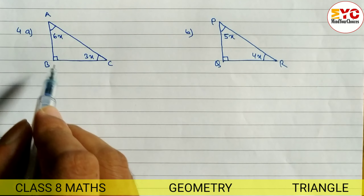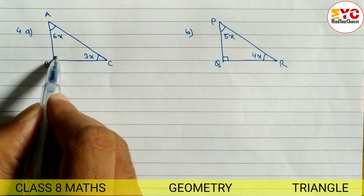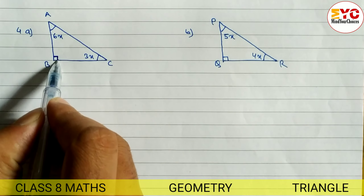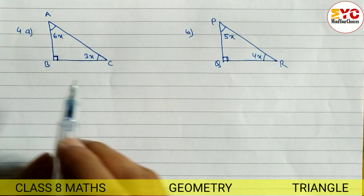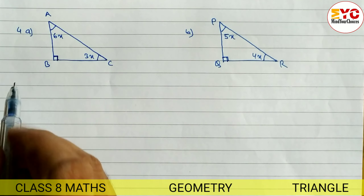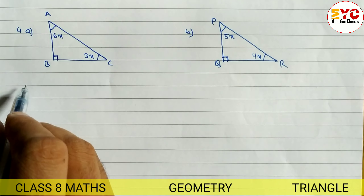You can see here this is a right angle triangle because here this is the sign of 90 degrees. So both are right angle triangles. Now we have to find out the value of x.